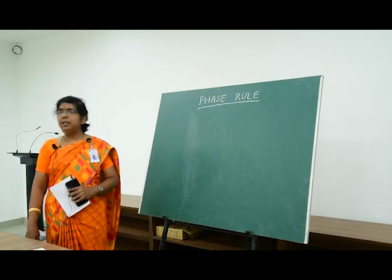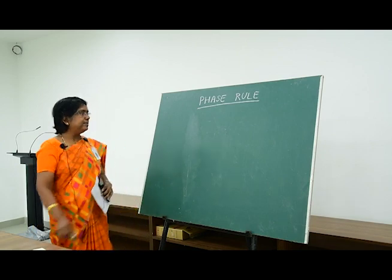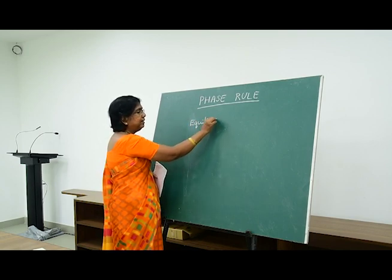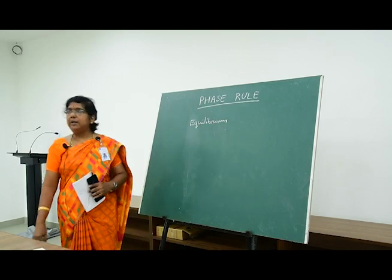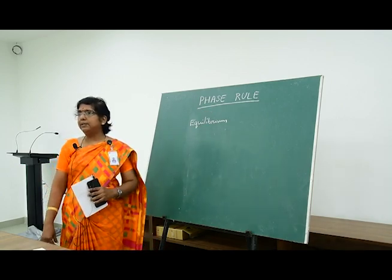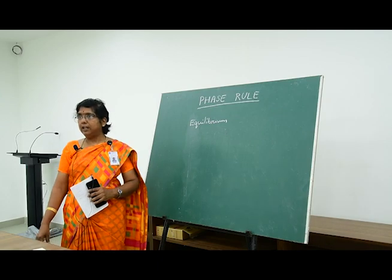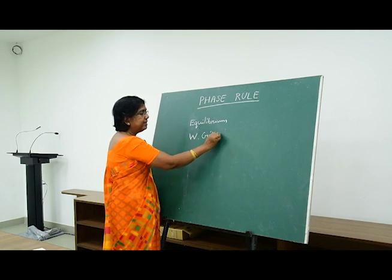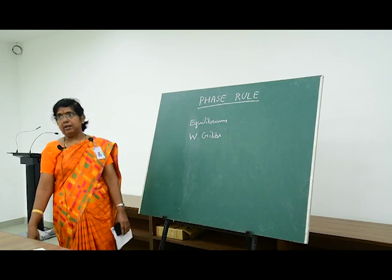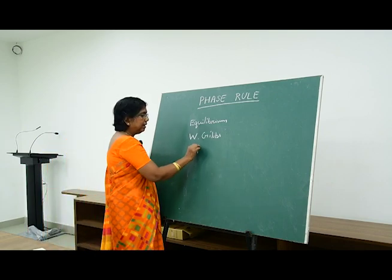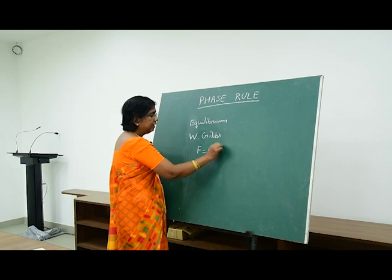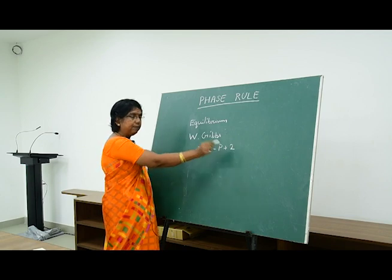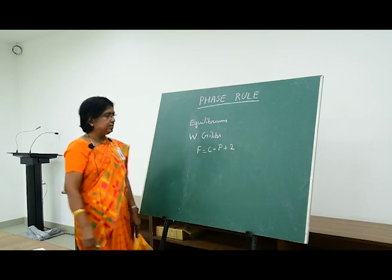Phase Rule is an important tool used in the quantitative treatment of systems in equilibrium. This also explains about the conditions which must be specified in order that a system can exist in equilibrium. A scientist by name Willard Gibbs, in the year 1876, was working on heterogeneous equilibria and arrived at a famous mathematical expression called Phase Rule, given by F = C − P + 2. Let us see what each of these terms represent.